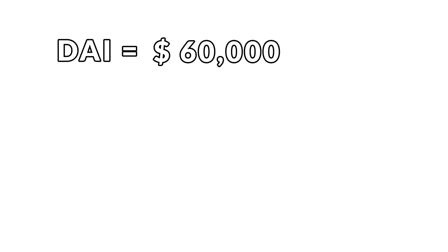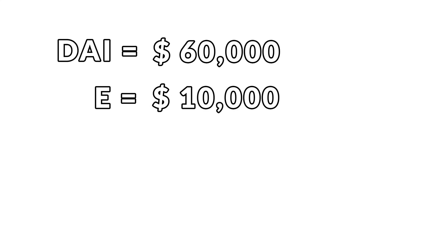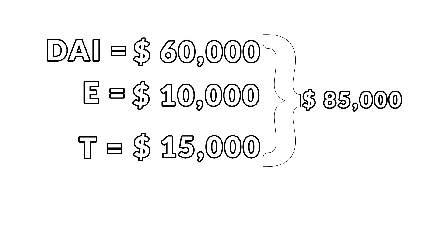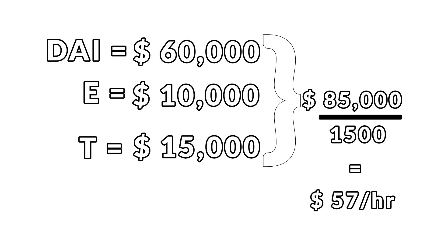For example, if you want to earn $60,000 USD a year, and your expenses — software licenses, internet, workspace, transport — come to around $10,000, and taxes are about $15,000 USD, that's $85,000 total. If you can realistically bill 1,500 hours a year, that's about $57 per hour. In America and Europe, $75 to $150 per hour is normal for mid-level consultants. In other regions, rates might be lower, but don't undercut yourself just to get work.